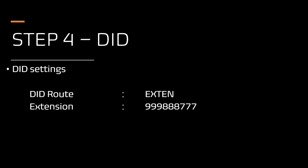Step 4: DID settings. Under DID settings, modify the DID route to 'Extend', then set the extension column to 999888777. This is the extension mentioned in the custom dial plan. For the extension context, set it to 'default'.